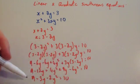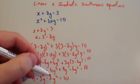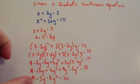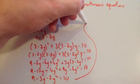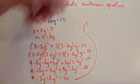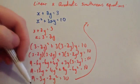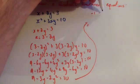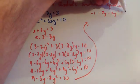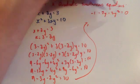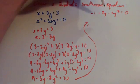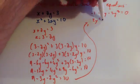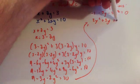Taking 10 away from both sides gives minus 1 minus 3y minus 2y squared equals 0. You want to make it equal to 0 so it's a quadratic you can factorize. Multiplying through by minus 1 gives 2y squared plus 3y plus 1 equals 0.